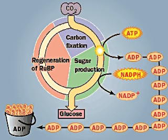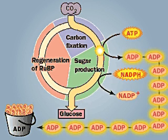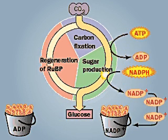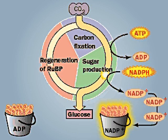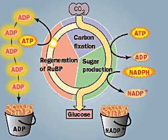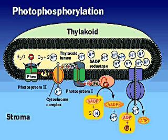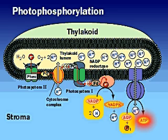Each turn of the Calvin cycle produces 12 ADP molecules in the sugar production phase, plus 12 NADP+ molecules. An additional six ADPs are produced during regeneration of RUBP. These molecules are needed for photophosphorylation to continue. Thus, the Calvin cycle and photophosphorylation are tightly coupled. Photophosphorylation is the source of the ATP and NADPH that drive the Calvin cycle.